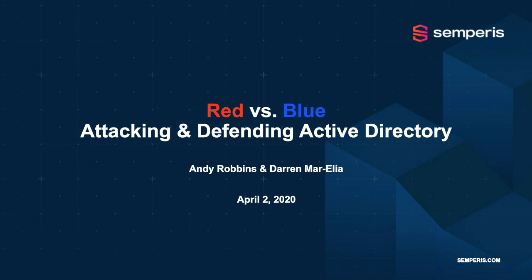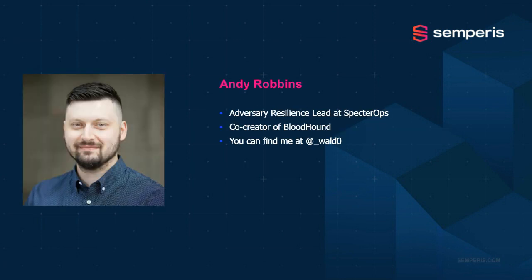Thanks, Tracy. My name is Andy Robbins. I'm the Adversary Resilience Lead at Specter Ops. I'm a co-creator of a tool called BloodHound, which is used to find attack paths in Active Directory, and I'll be showcasing that during the webinar. You can find me on Twitter at that handle — it's underscore Waldo with a zero. I'll pass it to you, Darren.